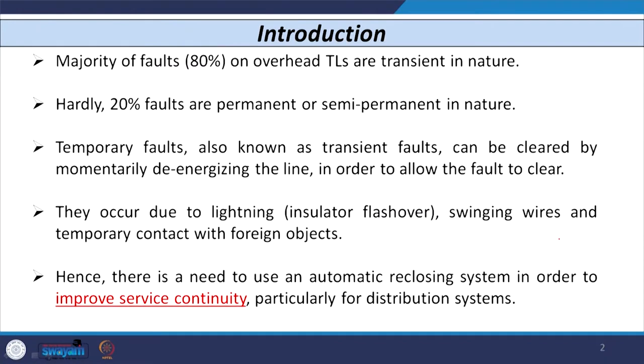In this class, we will discuss the auto reclosing and synchronizing feature, which is useful particularly in the case of protective devices and circuit breakers. We know that the majority of faults — 80 percent — on overhead transmission lines are transient in nature, meaning they may die out after some time. Hardly 20 percent of faults are either permanent or semi-permanent in nature.